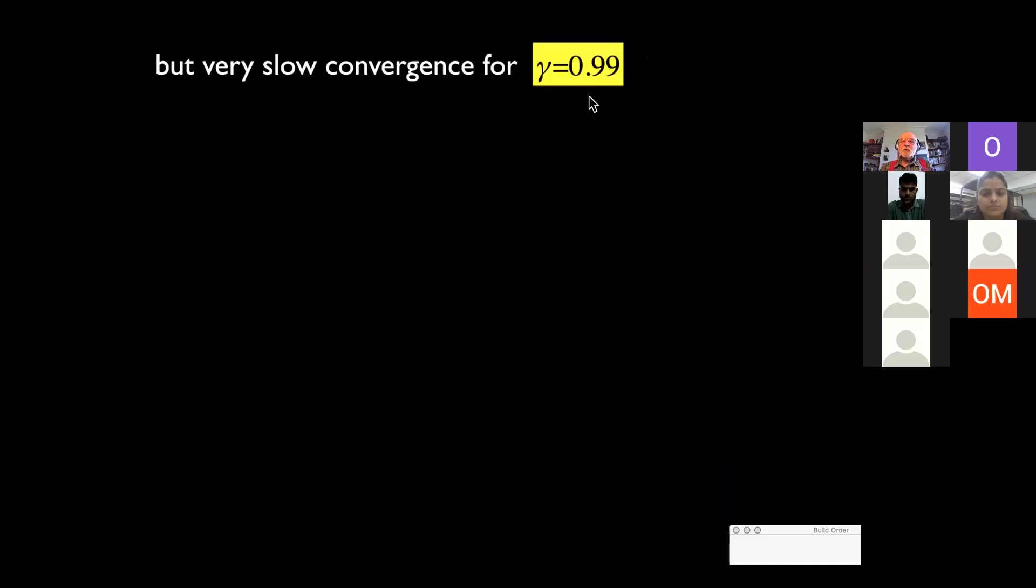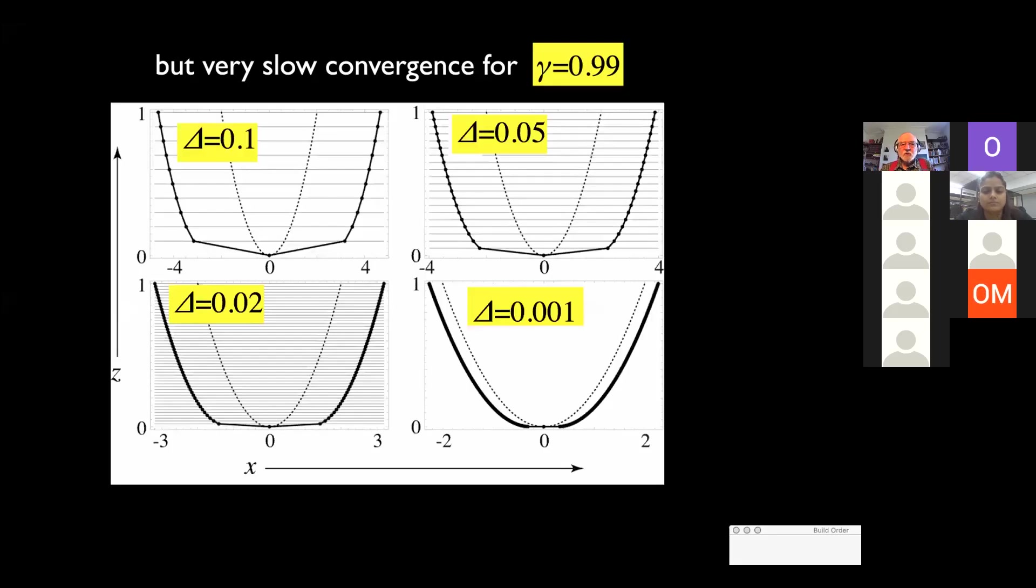However, if you choose gamma very close to 1, in other words, you choose a stratification such that the critical layer is very close to where the continuum would predict the rays horizontal, the convergence is extremely slow. There's this huge offset here. But you do converge eventually, but very, very slowly.